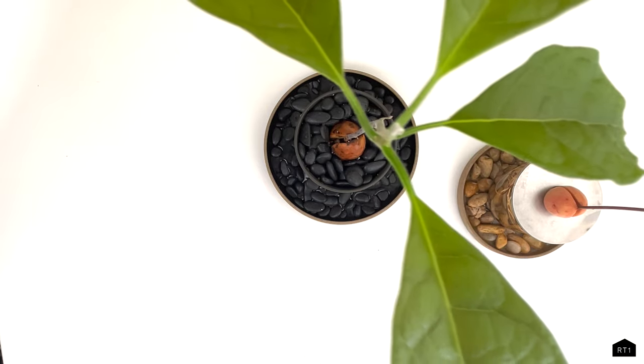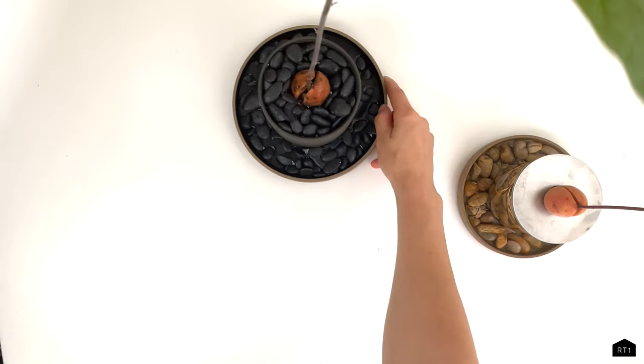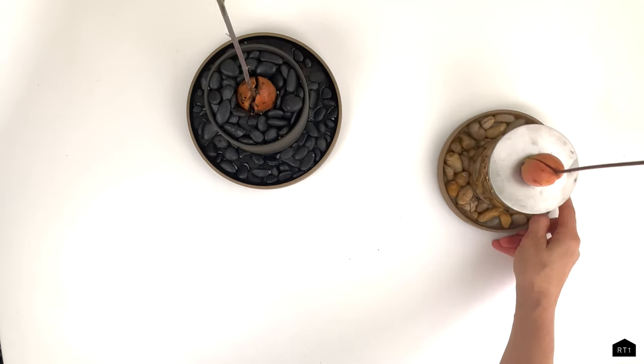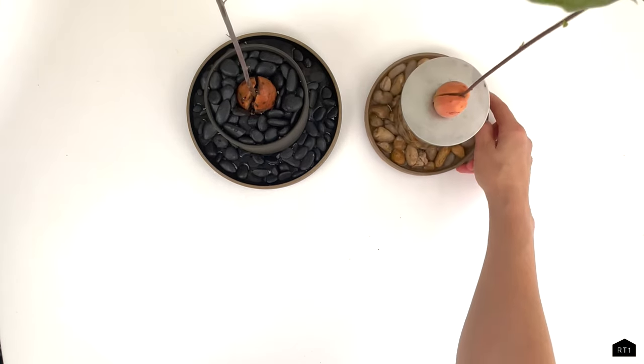You're going to want to let your plant sit for about five to ten minutes and check the soil moisture level again. If it's still dry a few inches below the soil, you're going to repeat the process.